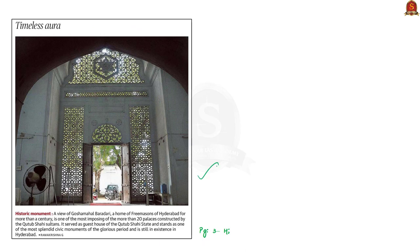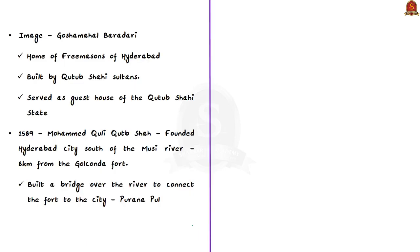Now let us take up the next image. It depicts a historic monument called Gosha Mahal Baradari — one of the most imposing palaces built by the Qutb Shahi Sultans in Hyderabad. It served as a guest house of the Qutb Shahi state and stands as one of the most splendid civic monuments of the glorious period. Mohamed Quli Qutb Shah is the founder of the city of Hyderabad. In 1589, he founded the city south of the Musi River, 8 kilometers from Golconda Fort, and built a bridge over the river now called Purana Pul.